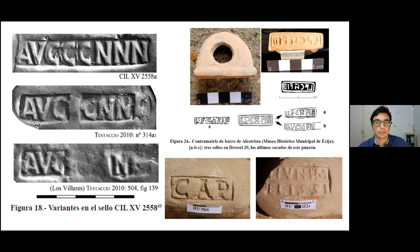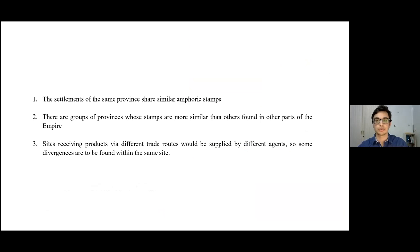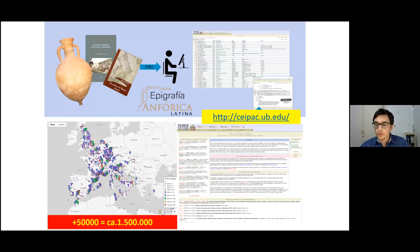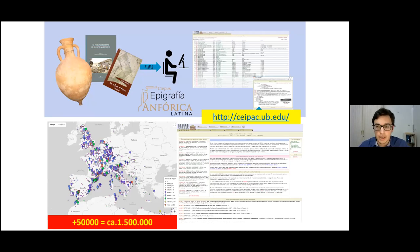To study the trade routes for Baetica olive oil and the possible influence of the provincial system on its distribution, some theoretical hypotheses have been established. The first states that settlements of the same province share similar amphorae stamps. The second, that there are groups of provinces whose stamps are more similar than those found in other parts of the empire. The third states that sites receiving products via different trade routes would be supplied by different agents, so some divergences are to be found within the same site. We use this proxy to find links between sites in the western Roman Empire by comparing the similarity of stamps found across thousands of archaeological sites.